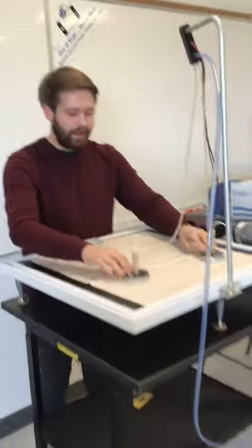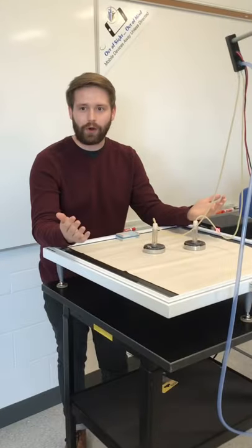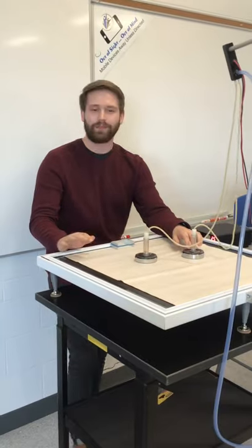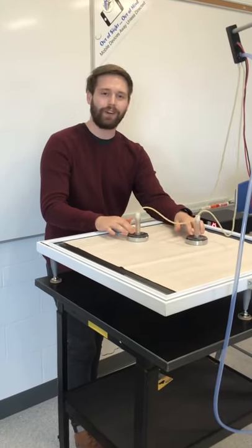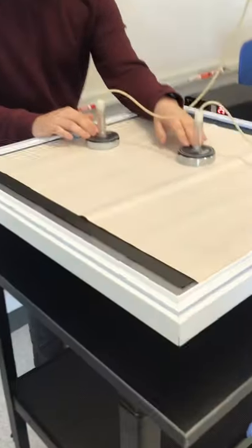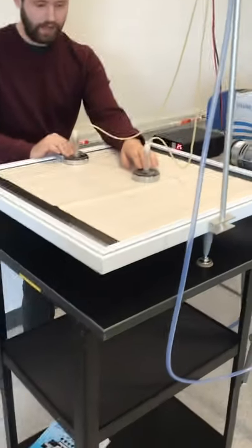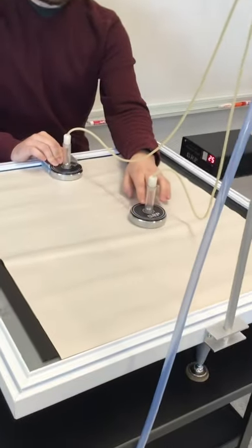Now you might be asking yourself, well, how are we supposed to map out what exactly happened there? And that's why we've got some carbon paper below that we're tracing here on. So what I'm going to do now is I'm going to activate the carbon paper so that we can get a trace of this interaction. And three, two, one, go.